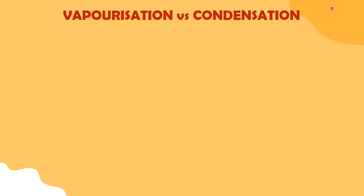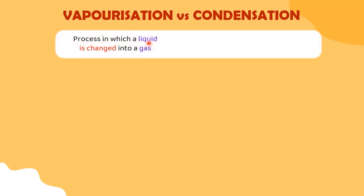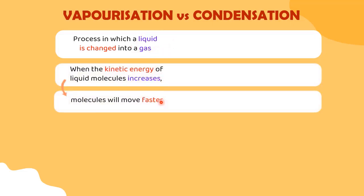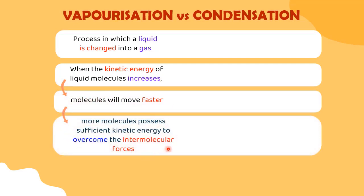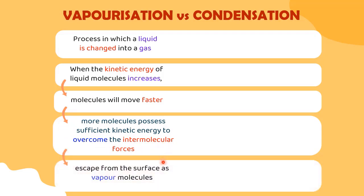The two processes that describe the properties of liquid are vaporization and condensation. Vaporization is the process of converting a liquid into a gas, also called evaporation. Since particles of a liquid move slower than in gas, the liquid must be heated to a higher temperature to turn into gas. Once heat is added, kinetic energy increases, hence the molecules move faster. Then, more molecules will possess sufficient kinetic energy to overcome the intermolecular forces between them, and they will escape the surface as vapor molecules.